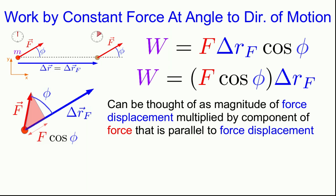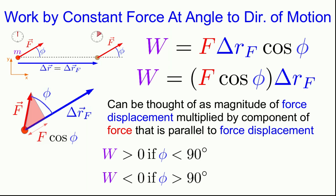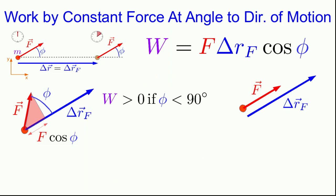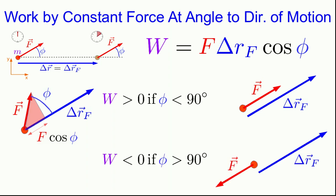Both f and delta r_f are magnitudes and so are positive, meaning the sign of the work is determined entirely by the angle phi. If phi is acute — less than 90 degrees — the work is positive. If the angle is greater than 90 degrees, the work is negative. This agrees with what we've already seen: if the force is in the same direction as delta r_f (phi = 0), we get positive work; if the force is opposite to delta r_f, we get negative work.